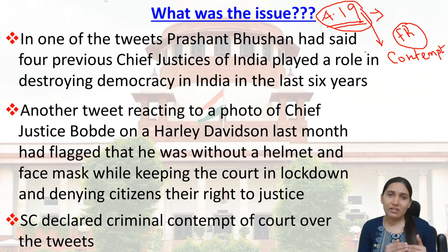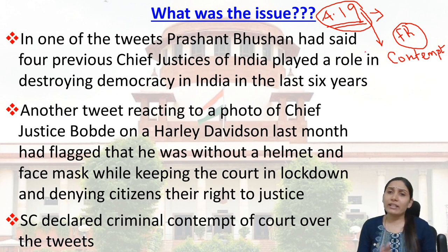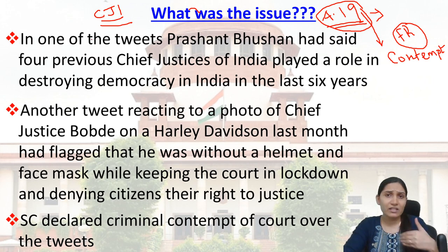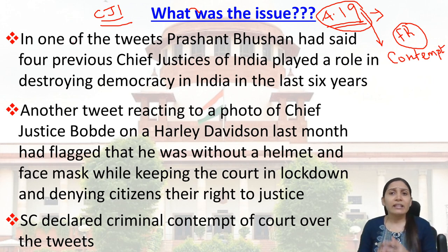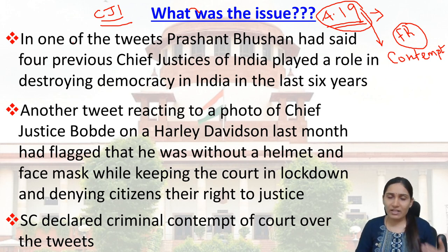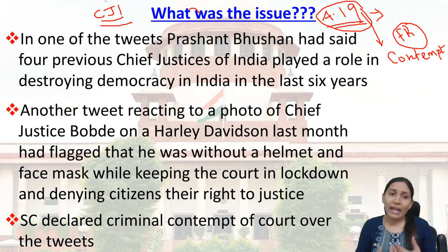In one of his tweets, advocate Prashant Bhushan said that four previous Chief Justices of India played a role in destroying democracy in India in the last six years. He was criticizing the apex court and the former CJIs — the Chief Justice of India is the senior-most judge of the Supreme Court. He said these four former CJIs have played a role in destroying democracy in India over the last six years.